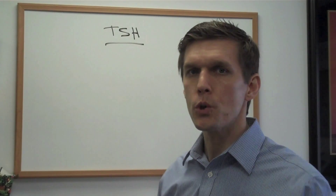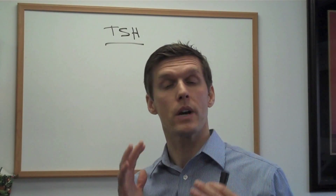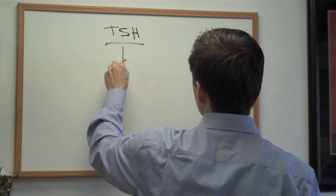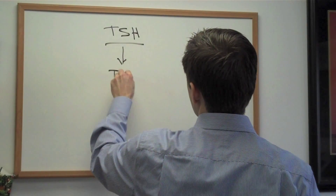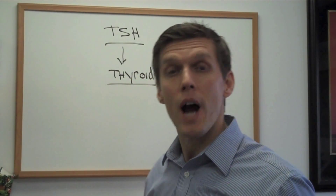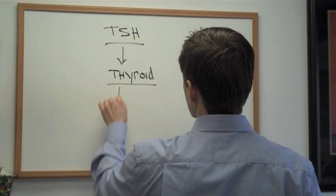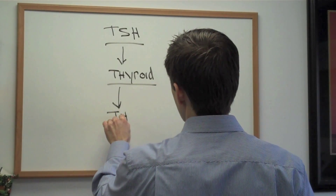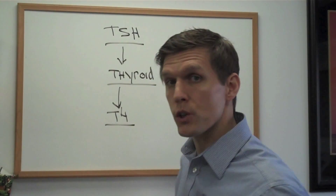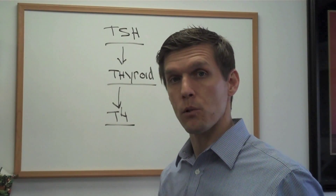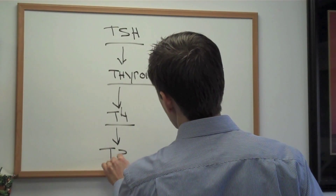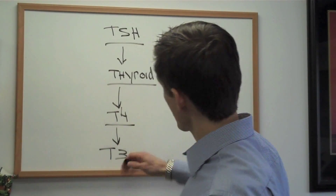Here's how it works. Your pituitary gland, located in your brain, will release TSH to tell your thyroid to release more thyroxin, or T4. T4 actually has to be converted to a more active form of thyroid hormone called T3. This is the conversion part — going from T4 to T3.